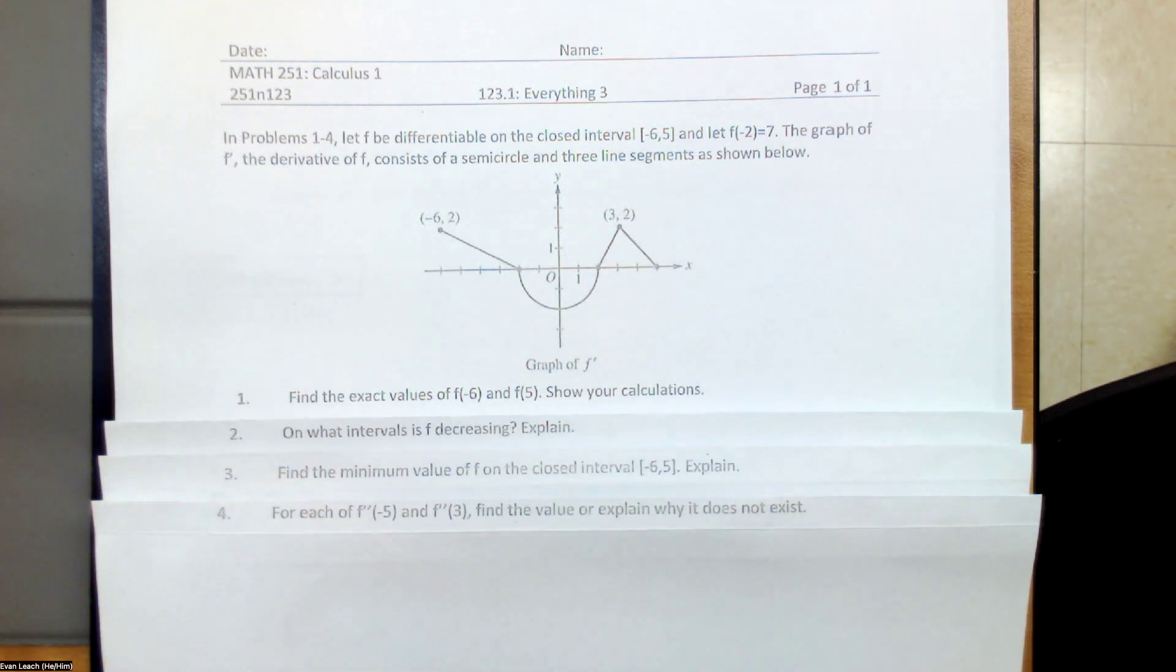So that's how we do things when I say here's the graph of f prime, and with the second fundamental theorem of calculus, I'll say the integral from, say, negative 2 to x of f of t dt. But in this case, I just said here's the derivative, and f of negative 2 is equal to 7.